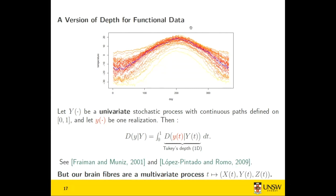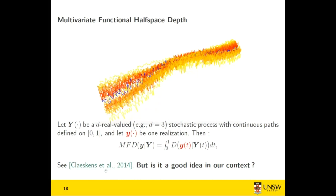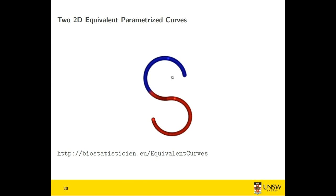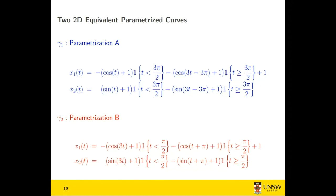This was done by Claeskens and other authors in 2014 — exactly the same formula, but now Y is a three-dimensional function. But is this a good idea in our context? I'll show an example with an S-shaped curve. We consider two different parametrizations of the same curve S: parametrization A (gamma 1) and parametrization B (gamma 2). These two sets of equations define exactly the same object in space but with different parametrizations.